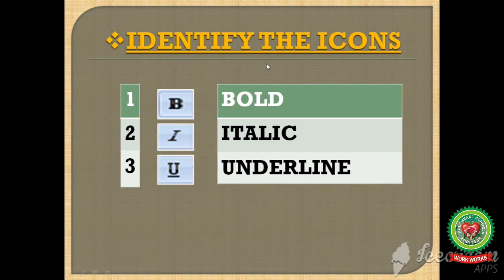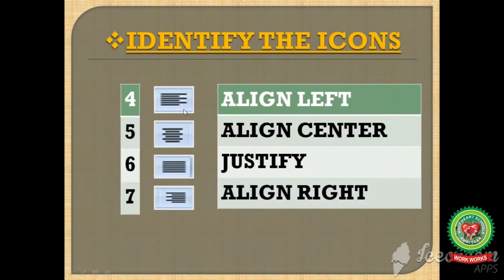Now we will do the identification of the icons. First, B is given — that is bold. Second, I is given — that is italic. Third, U is given — that is underline. Fourth is align left. If we are having equal lines on the left side that is align left; if we are having all sides equal lines that is justify alignment; if we are having equal lines on the right side that means align right; and if we are having equal lines in the center that means align center. Students, you have to note down these icons on your copy also.